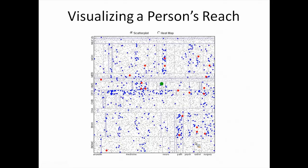Horizontal bands group people at the same institutions — these are all the Mass General Hospital people, these are all the Brigham Hospital people. Vertical parts are departments and divisions — alphabetical, with anesthesia on the left and surgery on the right. This green dot is me; I'm in the IT department at Harvard Medical School. The red dots are my co-authors and the blue dots are the co-authors of my co-authors — this is a picture of my reach overlaid on an organizational map of the medical school.